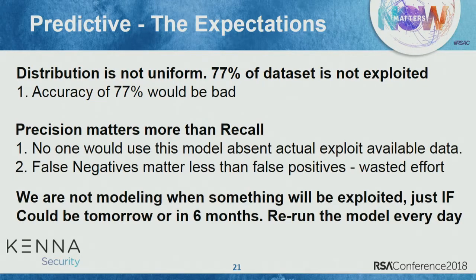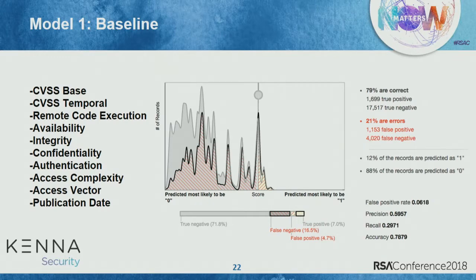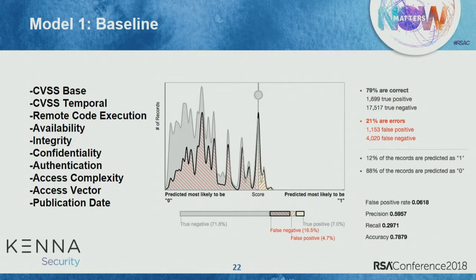Let's try the naive approach and think about why it doesn't work. The most naive approach is to throw in CVSS base and temporal vectors, whether it's a remote code execution, the categorical data CVSS is built on, and the publication date of the vulnerability. What you get is a model that's 79% correct — which seems cool until you realize the baseline is 77% — and it's very difficult to separate what is predicted yes from predicted no. The precision of this model is about 59% and the recall is about 30%.